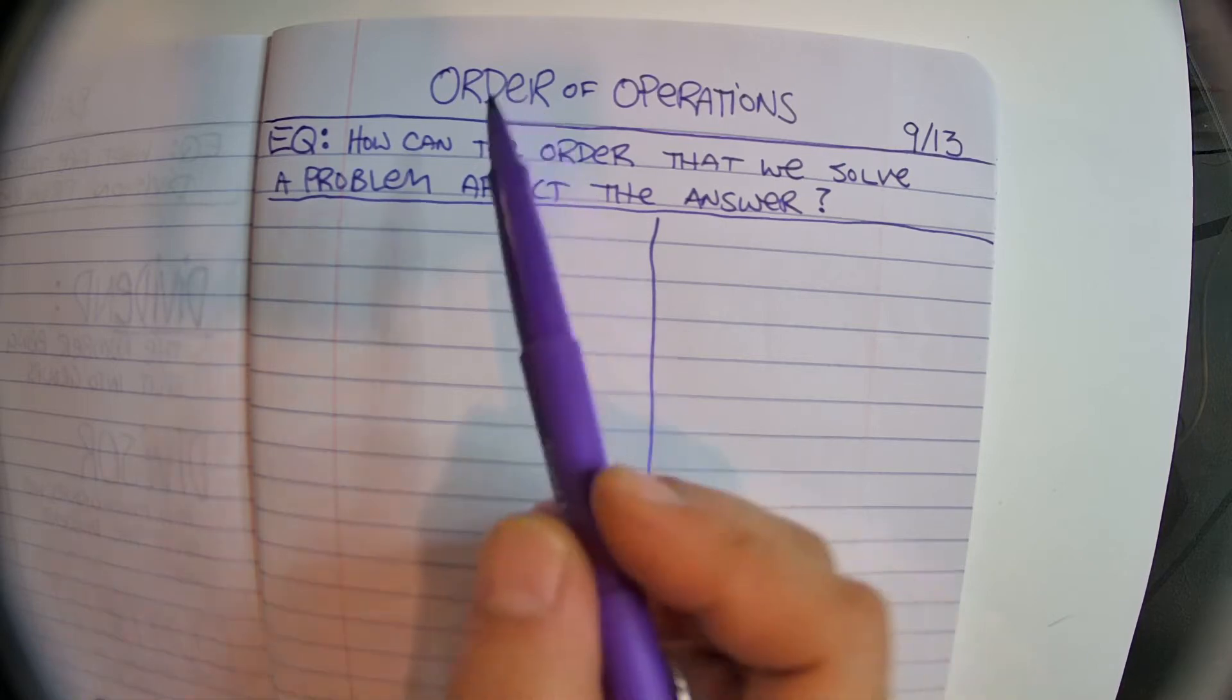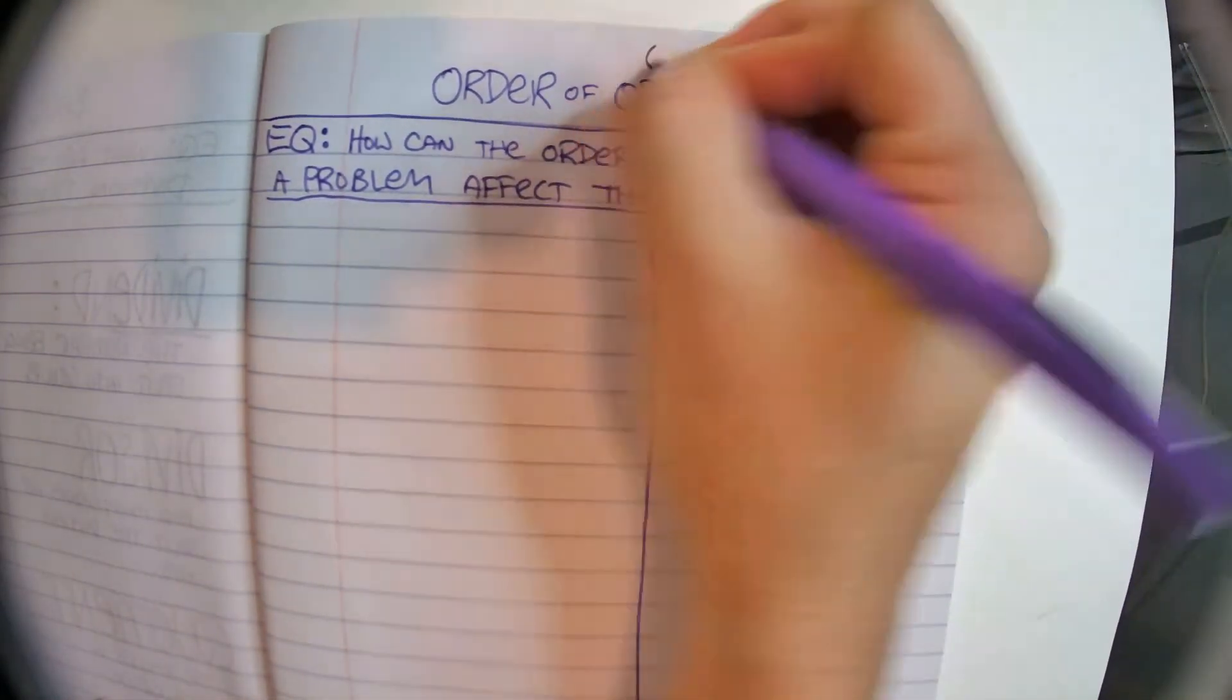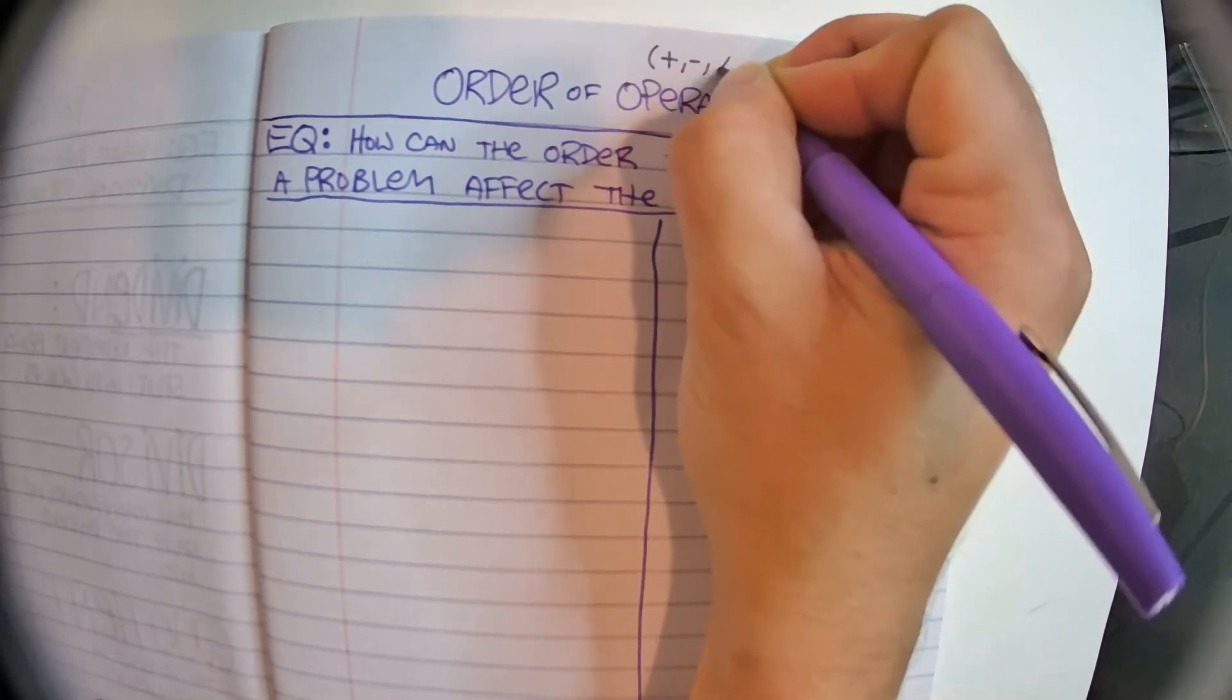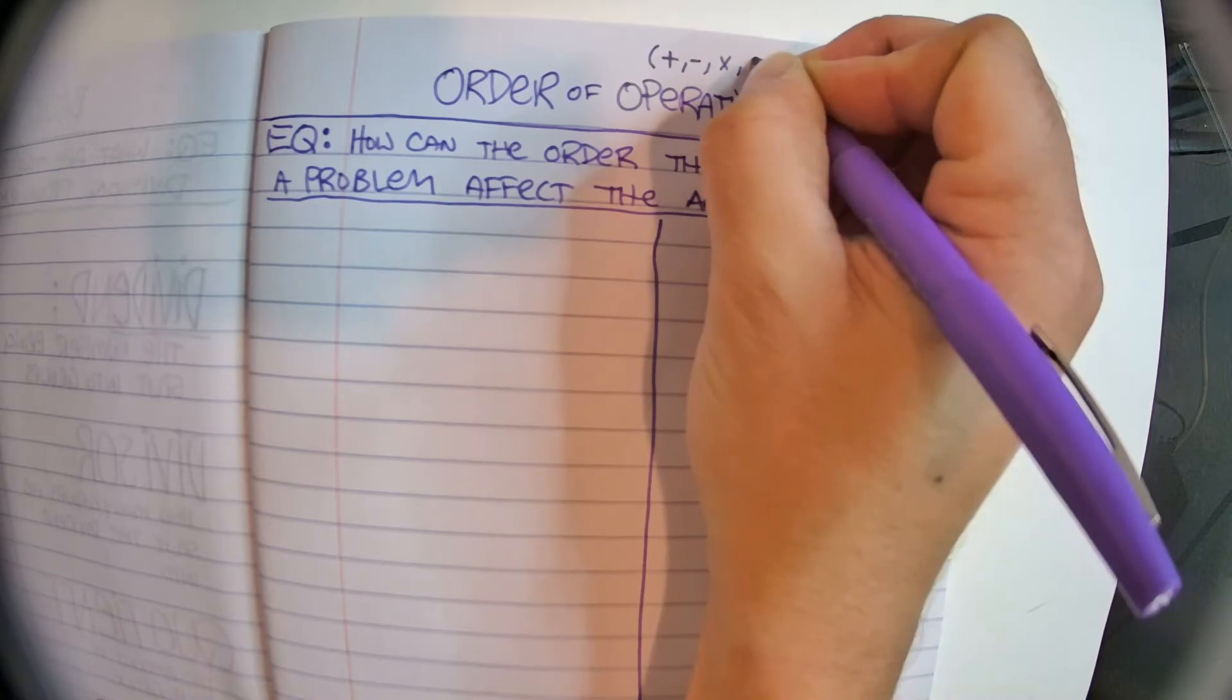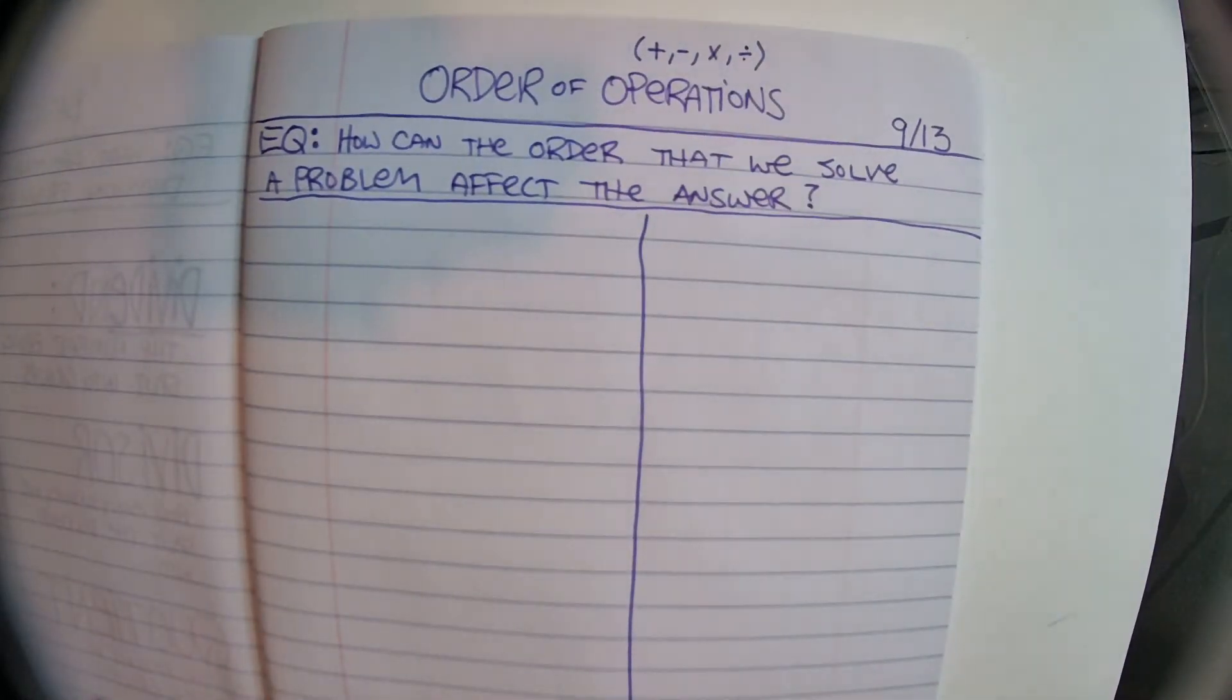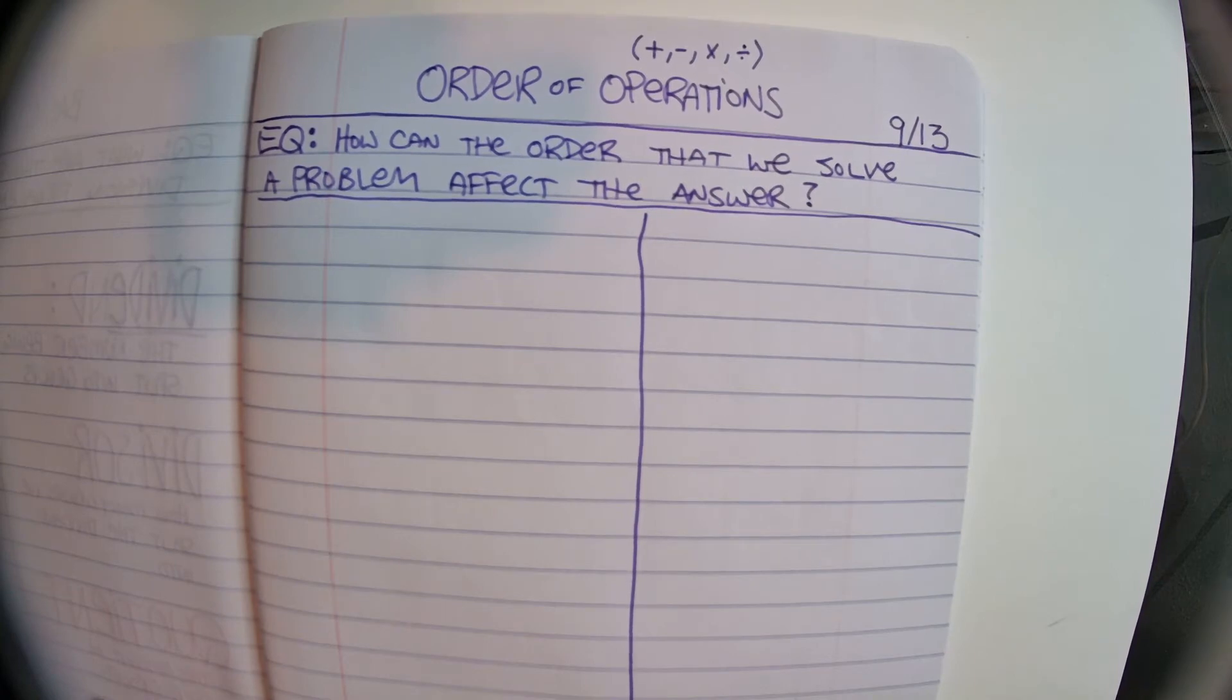While you do that, let's talk really quick. Order of operations—remember, your operations are plus, minus, multiply, divide. So addition, subtraction, multiplication, division are your operations. Now we have to calculate in a certain order so that everybody that does the problem, no matter where they are in the whole entire universe, gets the same answer.